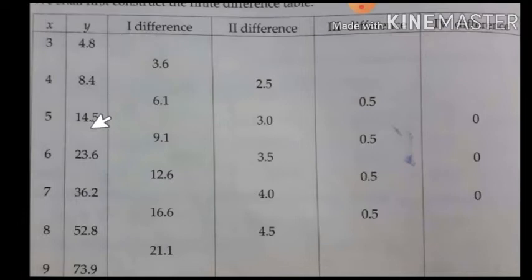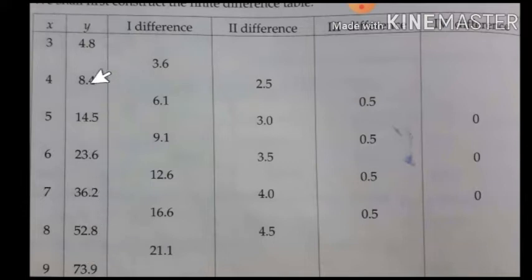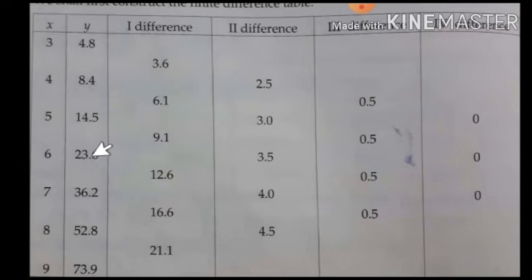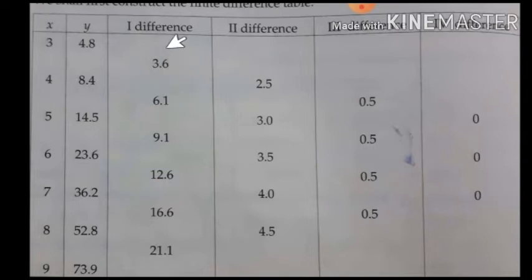Continuing the first differences: 14.5 minus 8.4, denoting the y values as y0, y1, y2, y3, y4, y5, y6. Then y2 minus y1, y3 minus y2 gives 23.6 minus 14.5, then 36.2 minus 23.6, 52.8 minus 36.2, and 73.9 minus 52.8. In this way we obtain the complete first difference column.